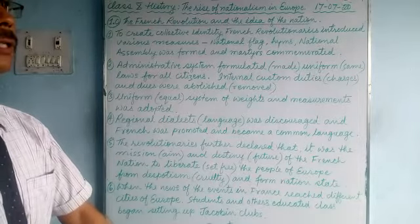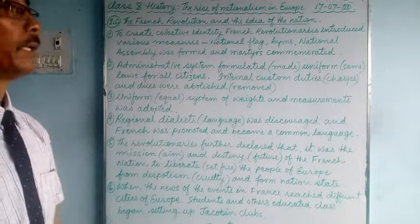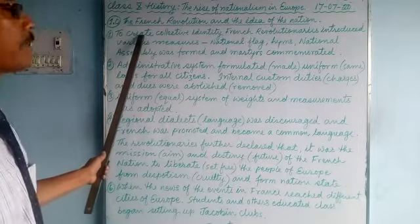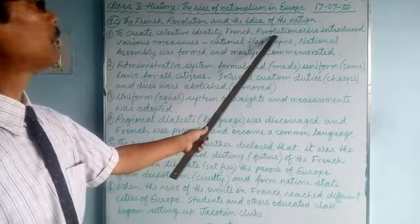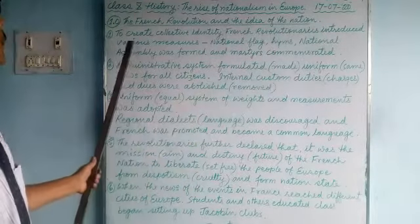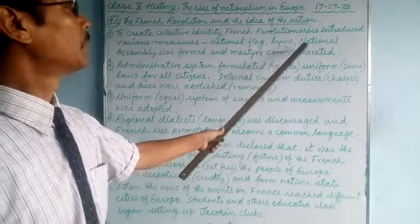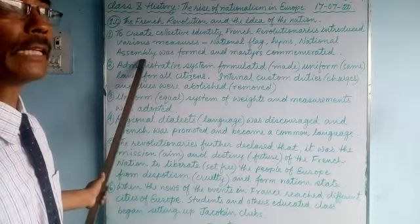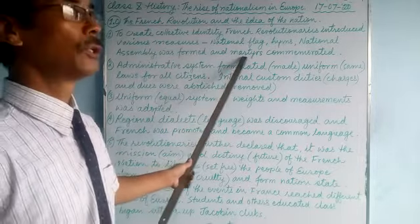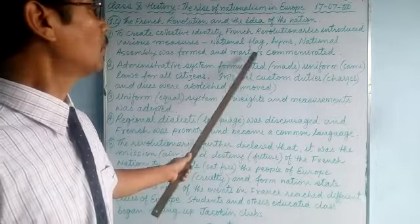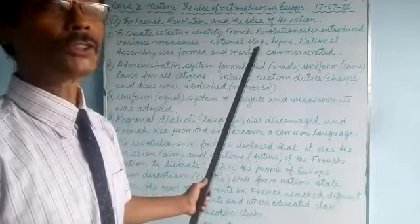In our previous class, we talked about how the French revolutionaries introduced various steps to create a collective identity. These steps included creating a national flag, national anthem and hymns, and the formation of a national assembly to formulate laws. Martyrs who sacrificed their lives during the struggle were commemorated and respected.